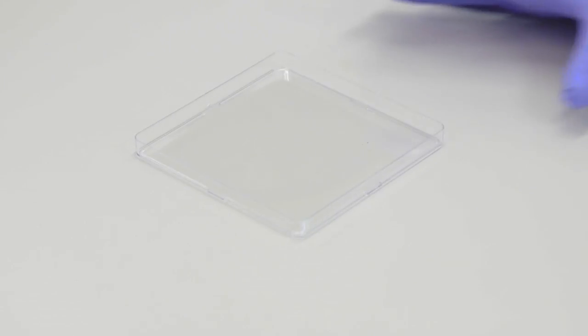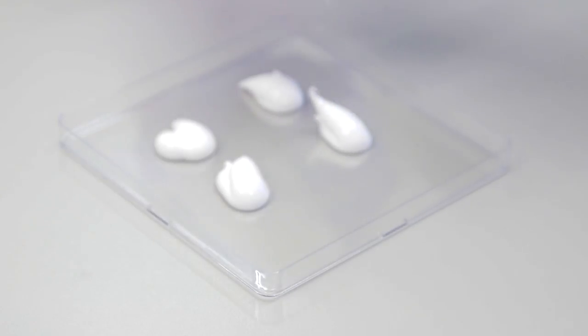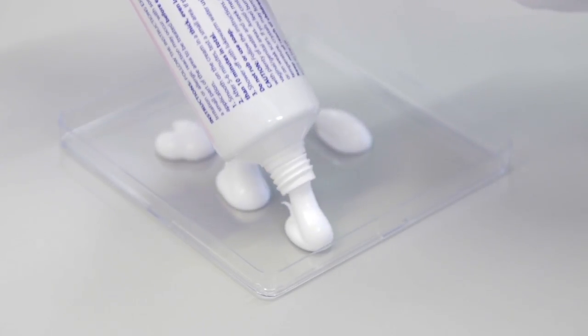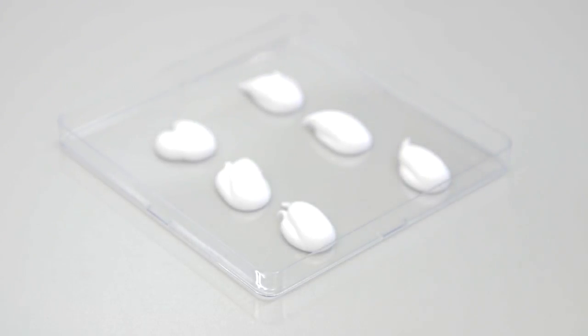A square petri dish is prepared with drops of any commercially available hair removal cream. A separate drop is used for each ear and each row of drops is for an individual set of mouse ears. These can be reused depending on how many ears you have to prepare.